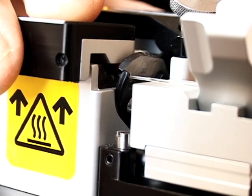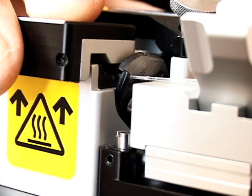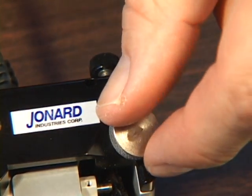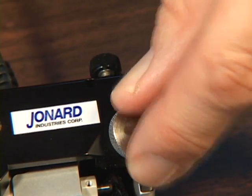Test this by sliding the fiber back and forth. The proper setting should allow the fiber to move through the blade with slight friction caused by contact with the blades. Now turn the adjustment screw clockwise ever so slightly, approximately 15 degrees.